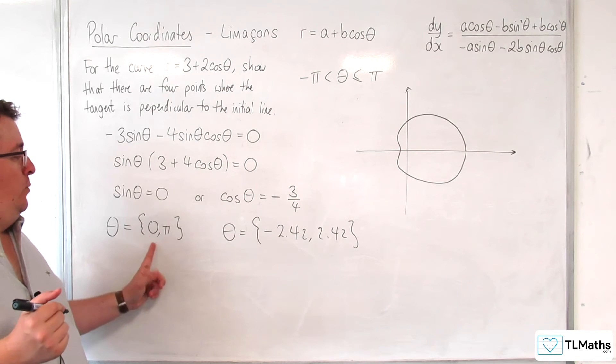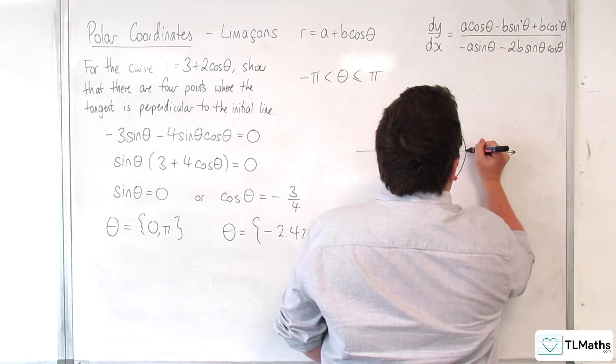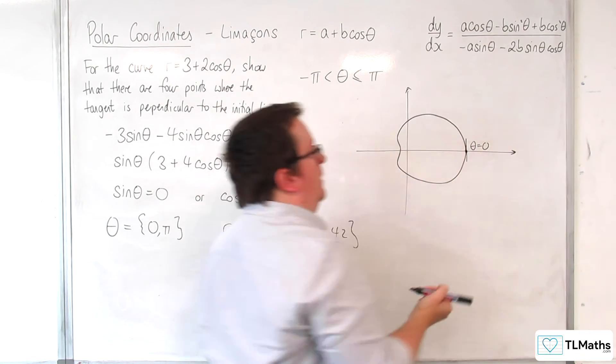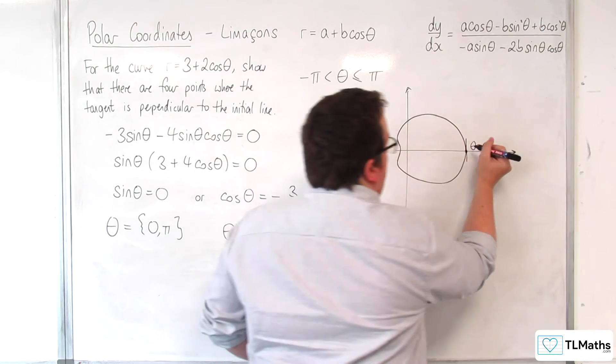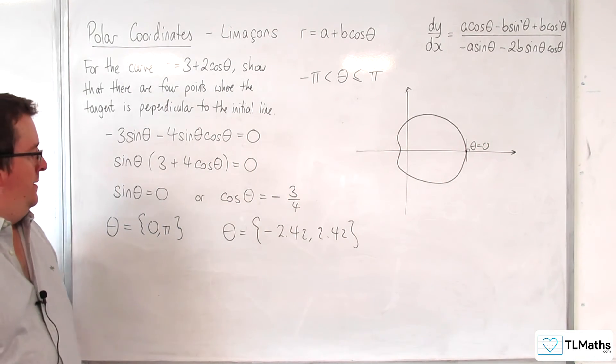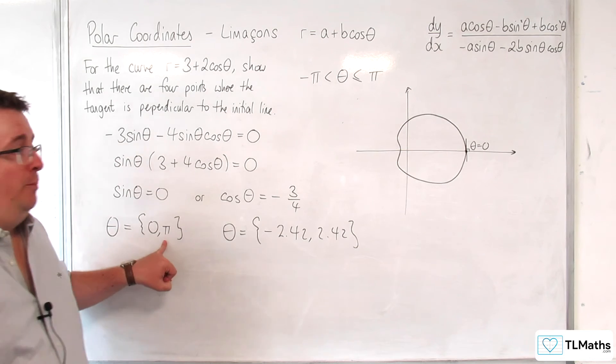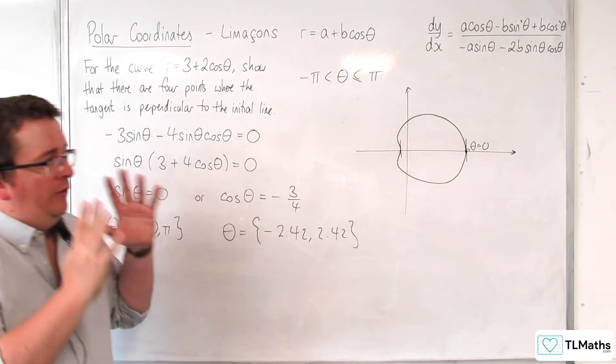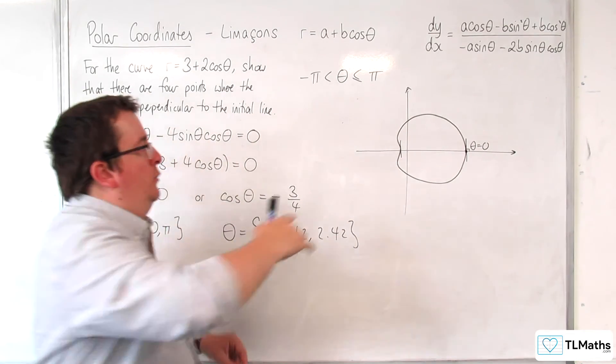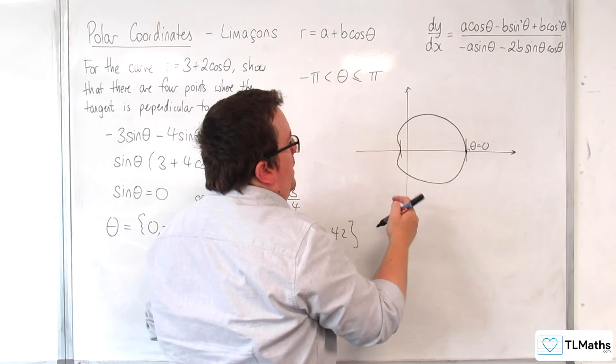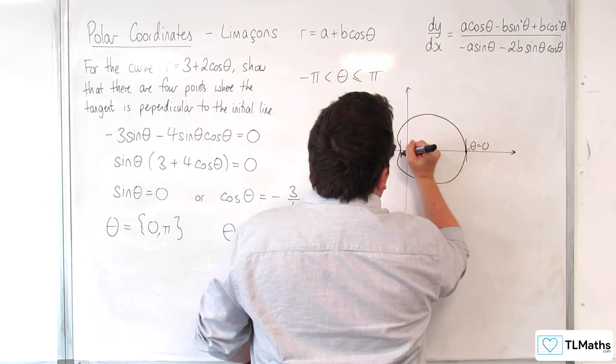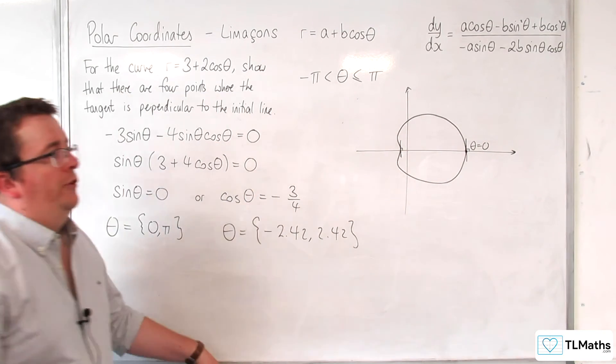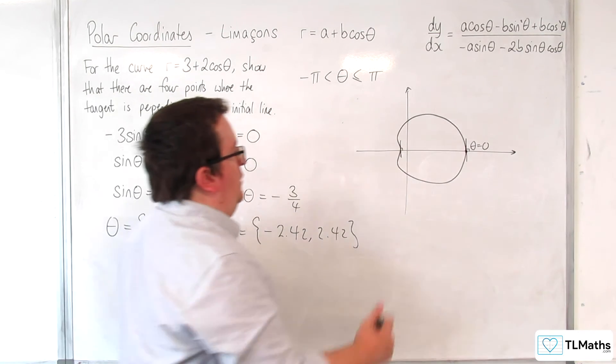So we've got theta equals 0, which is here. That's our first one where the tangent is perpendicular to the initial line. We've got theta equals pi, which is this point here. So what that's telling you is this curve has this dimple as it comes round. And we can say that, at that point, the curve is perpendicular to the initial line. So that's theta equals pi.